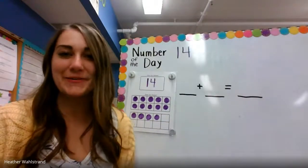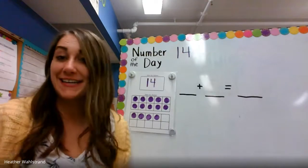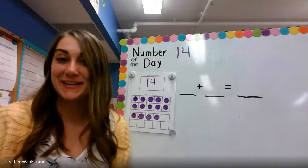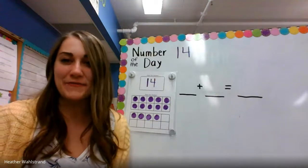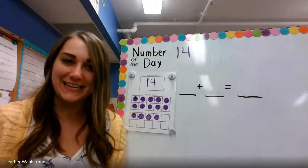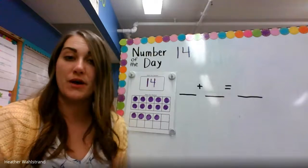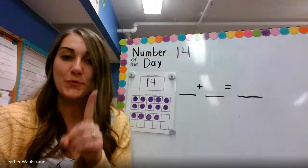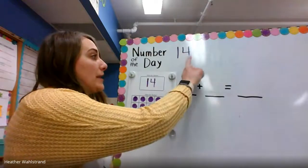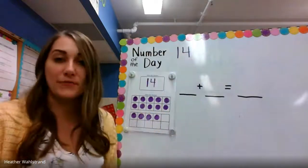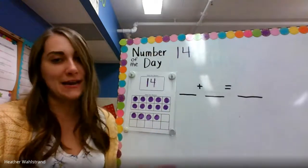Hi, kindergartners. Welcome back to Number of the Day with Mrs. Wallstrand. Can anybody guess what number it is today? Exactly, it's number 14. And we know that numbers in the teens start with a one. So when we look at 14, we know a one and a four is 14 — one group of 10 and four extra ones.